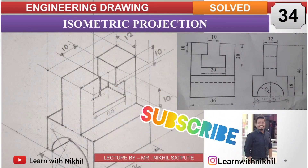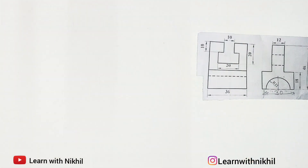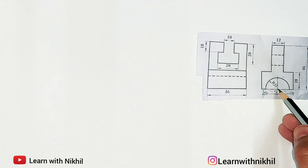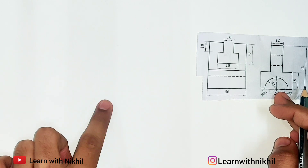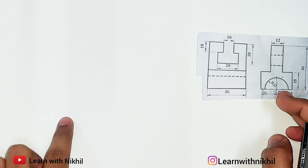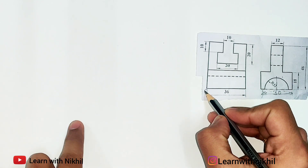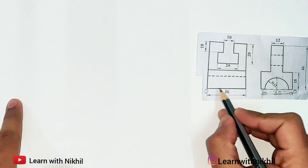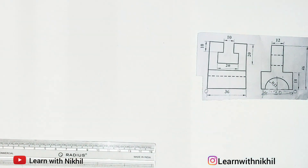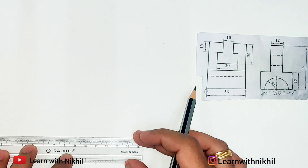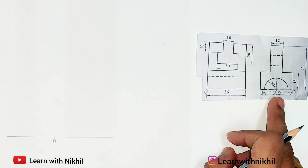Hello and welcome back to my channel 'Learn with Nikhil'. In this video we have taken another isometric projection problem where we have been given two views — it can be front view, side view, or anything. The left side view is on the right, so this is point O and this is point O. The 36 distance will be on the right side and 30 distance will be on the left side.